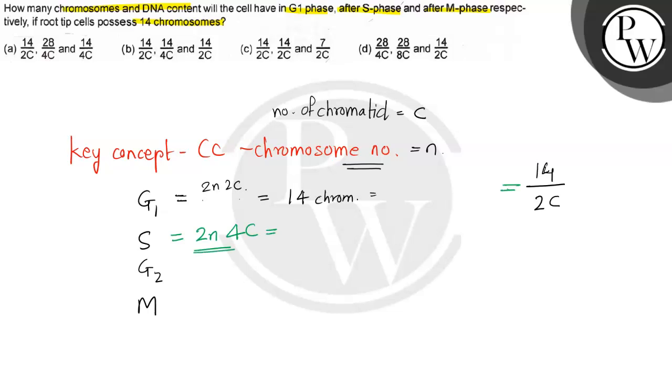Chromosome at the end of S phase—the DNA content is double. So there will be 14 chromosomes, but also there will be 4 chromatids. So it will be 14 by 4C.